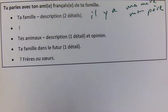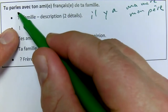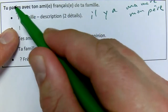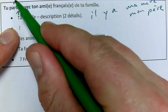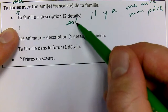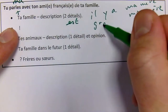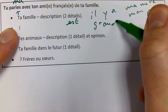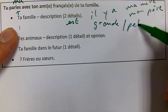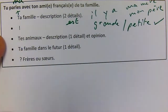Or you could even say how big or small your family is — so we would switch the 'ta' to 'ma': 'ma famille est grande' or 'petite.' One point in the pocket!